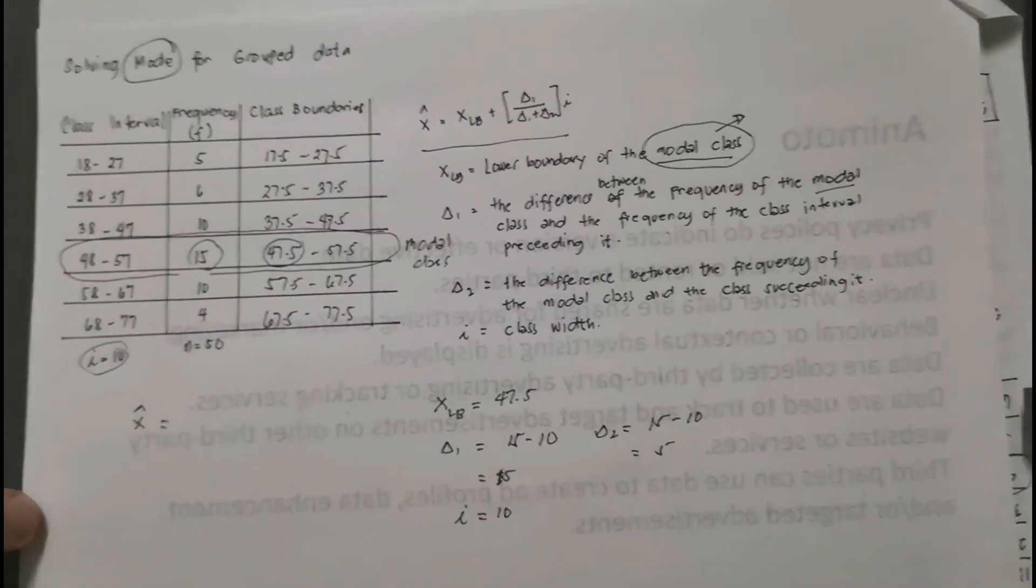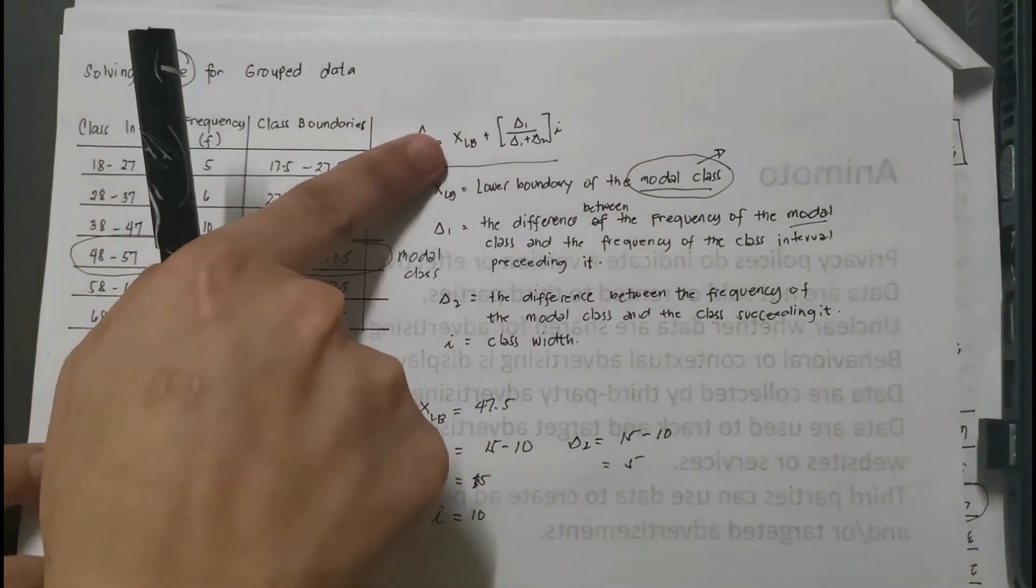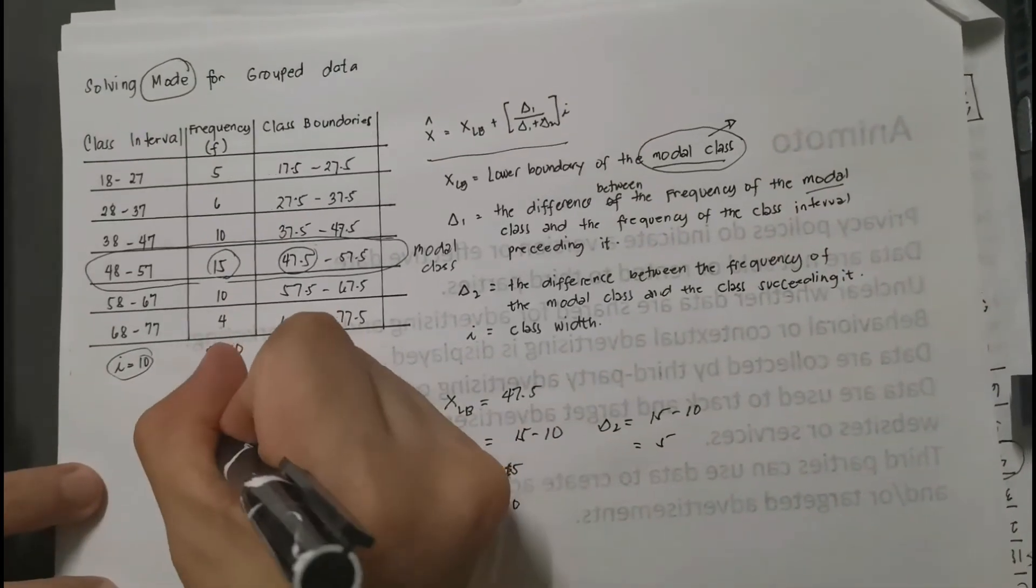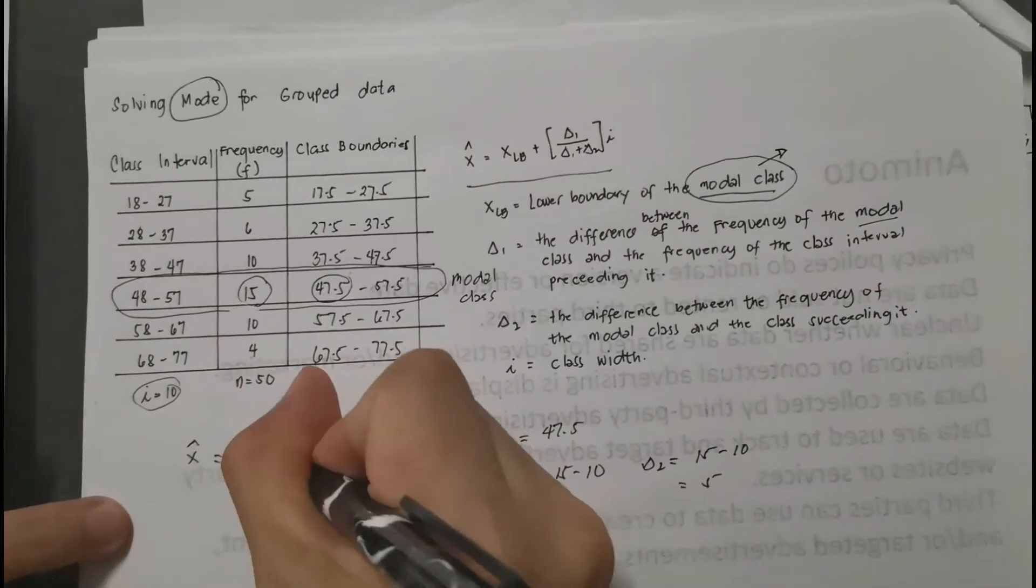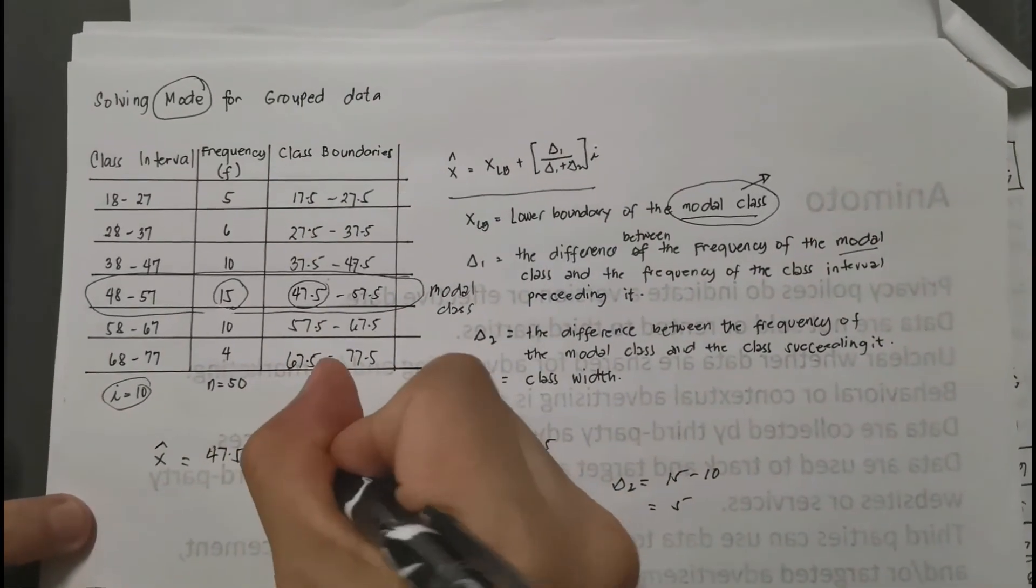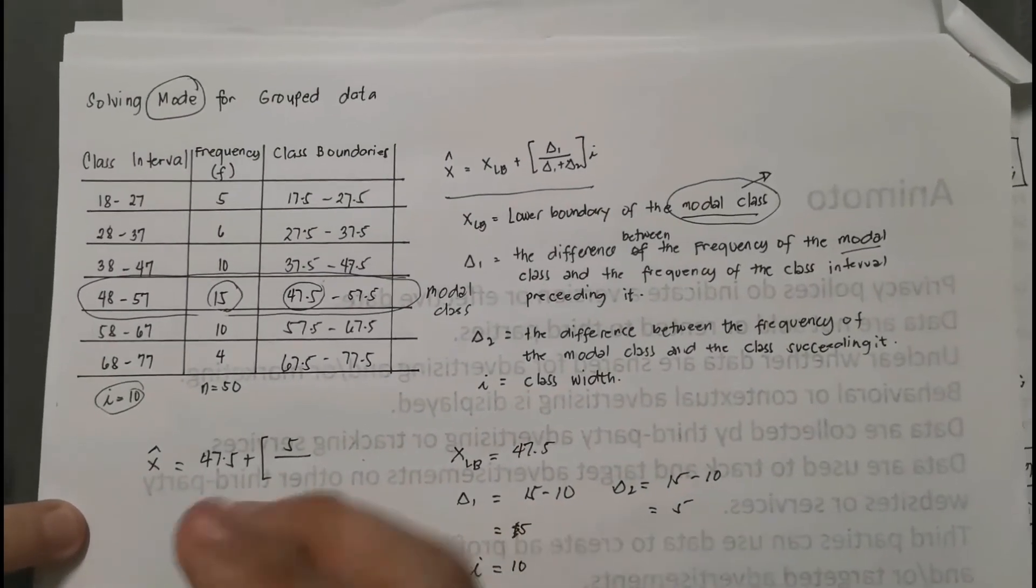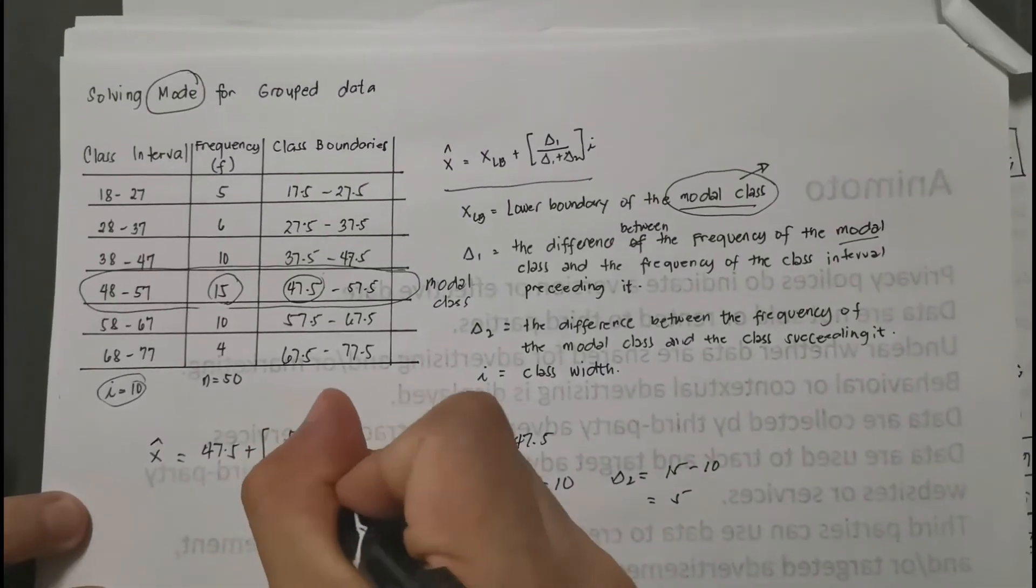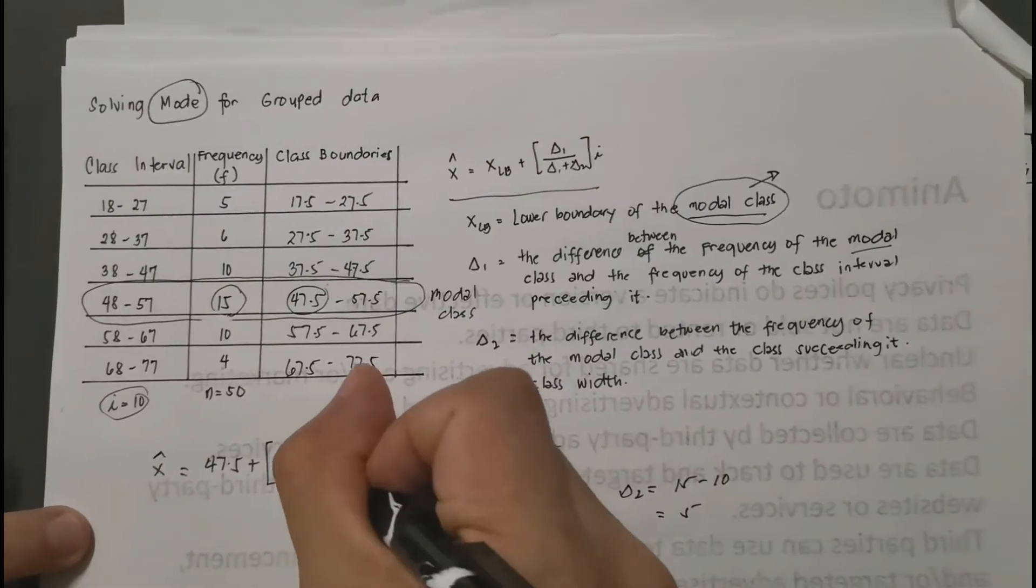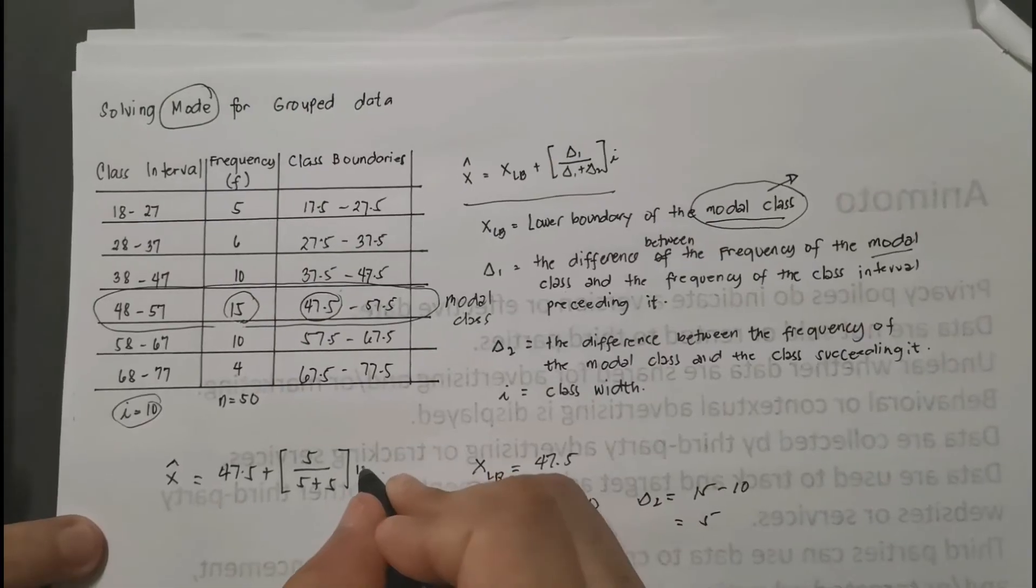Okay, so I think we completed already all the variables needed in our given formula. Let's substitute now. Let's start with the x sub lb, or the lower boundary of the modal class, which is 47.5. There you go, you have 47.5 plus, let's start with delta 1, which is 5, over delta 1—of course delta 1—that's another 5, plus delta 2, which is 5, times our i, which is 10.